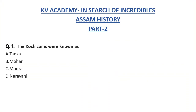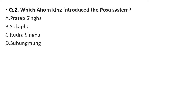Today's first question: the Koch coins were known as — option A: Tanka, option B: Mohar, option C: Mudra, option D: Narayani. The correct answer is option D, Narayani. The Koch coins were known as Narayani.